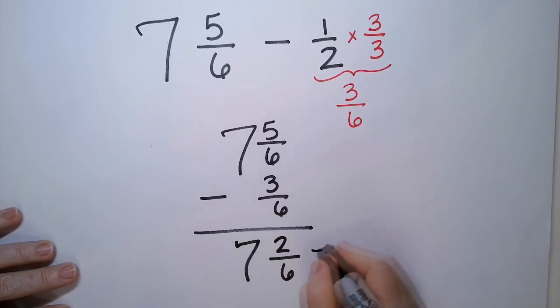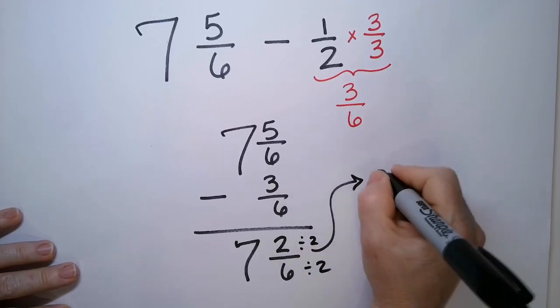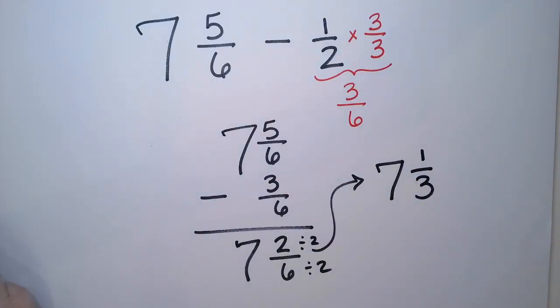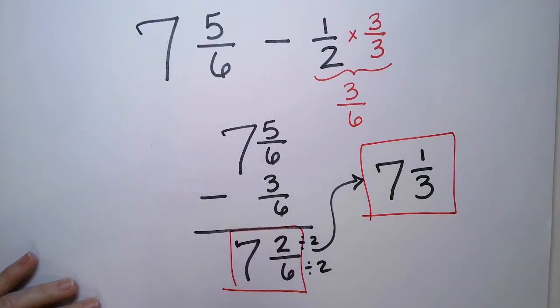And if we want to reduce this, we can. I can divide the top and bottom by two. I get seven and one-third is my final answer. Either of these is fine. It just depends on what your teacher prefers. Simplest form or is it okay to leave it like that?